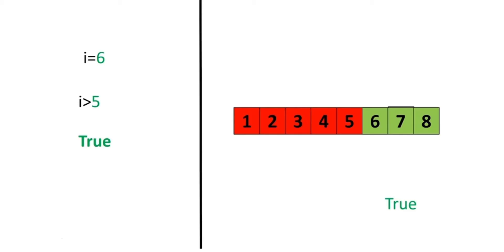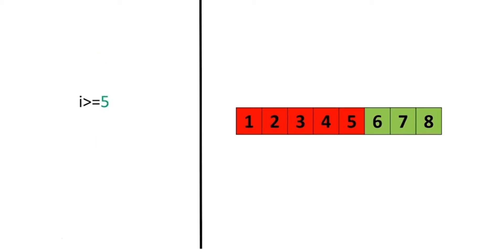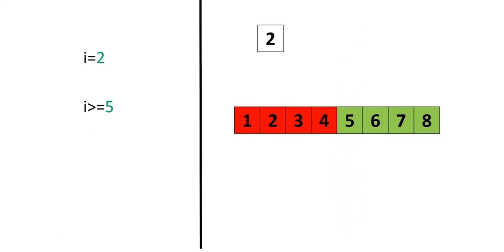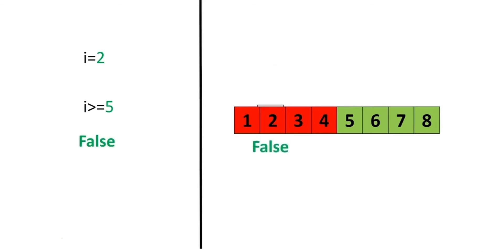We can also apply the same operations to floats. If we modify the operator — if the left operand i is greater than or equal to the value of the right operand, in this case 5, then the condition becomes true. In this case, we include the value of 5 in the number line, and the color changes to green accordingly. If we set the value of i equal to 5, the operand will produce a true. If we set the value of i to 2, we would get a false because 2 is less than 5.